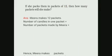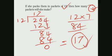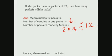When you are writing in the statement: Meera makes 12 packets. Number of candles in 1 packet equal to 6. And the number of packets made by Meera equal to 204 divided by 12. Obviously we know that the answer is 17. Hence, Meera makes 17 packets.